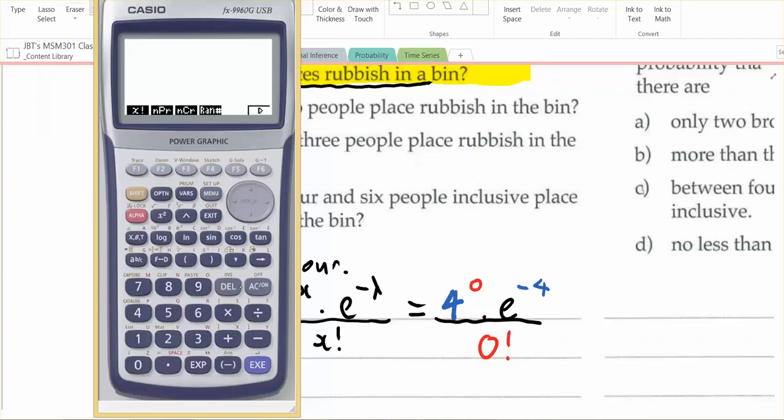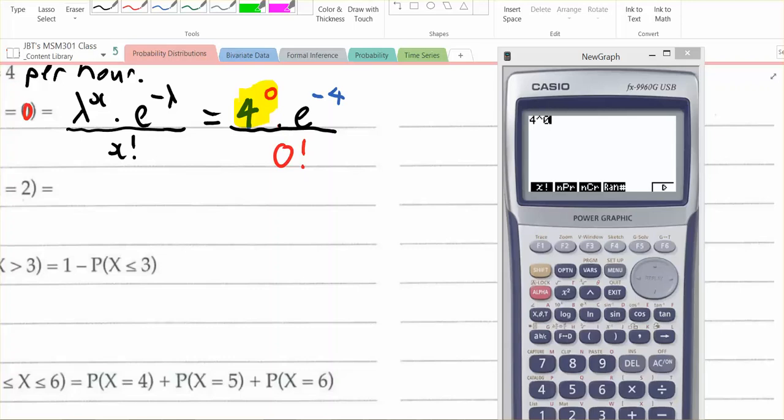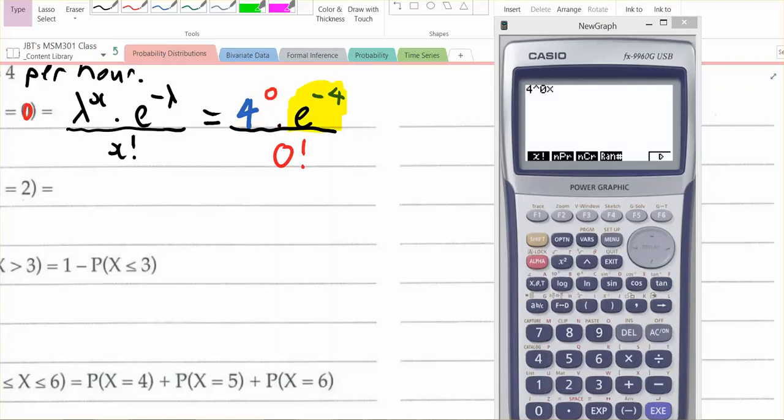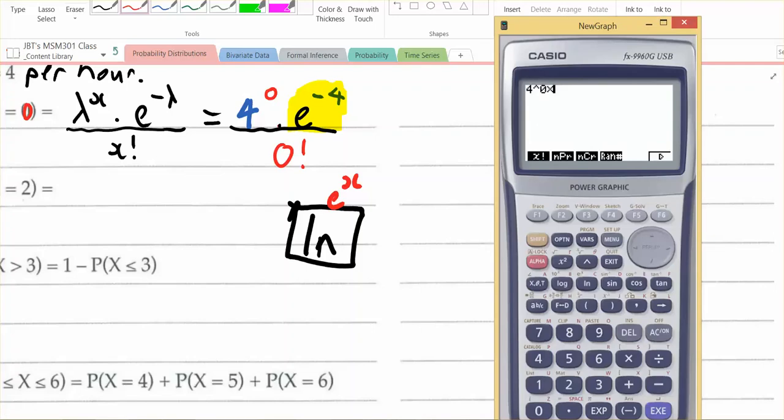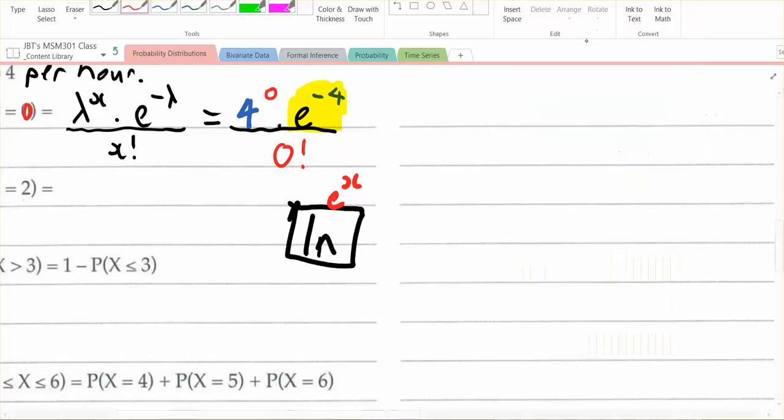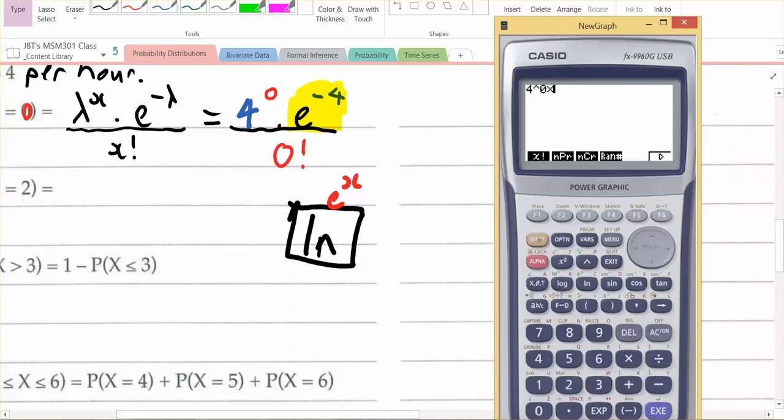So plugging the numbers in, I want to go 4 to the power of 0 times e to the power of negative 4. Now, e on our calculator is actually above the ln button, so I'm looking for a button that looks like this, and it looks like it says in, it's actually ln. ln is log natural, but above that button is e to the power of x, so the secondary function. So to get there, we have to go shift, so I've gone shift, and then I go the ln button, and I get e to the power of, and it's e to the power of negative 4, negative 4, okay?